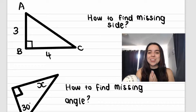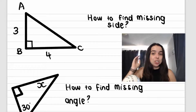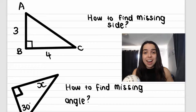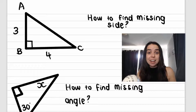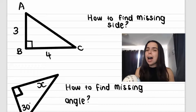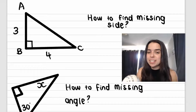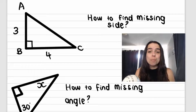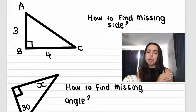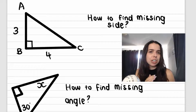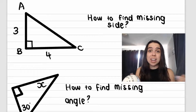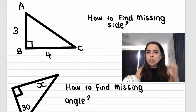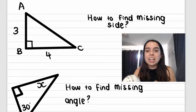I'm going to give you two situations on the screen. Situation number one: how do I find that missing side? Situation number two: how do I find that missing angle? I really hope you can give me an answer for both of these right now. Even if you're brand new to trigonometry and you've never done it before — you're in grade 10 basically. How do you find the missing side? Let's go over it.